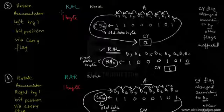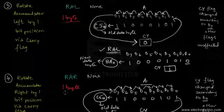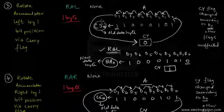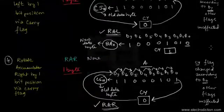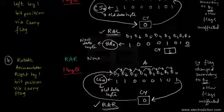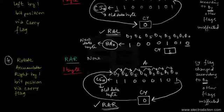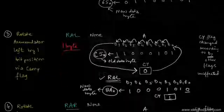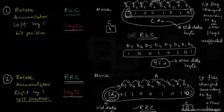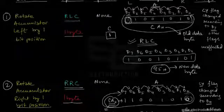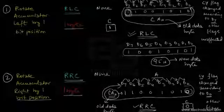Both RAL and RAR are single byte instructions. The carry flag is the only flag bit affected — according to bit D7 for RAL, and according to bit D0 for RAR. The rest of the other flag bits remain unchanged, the same as we saw with the RLC and RRC instructions.